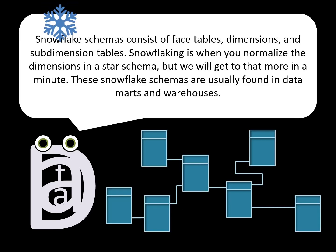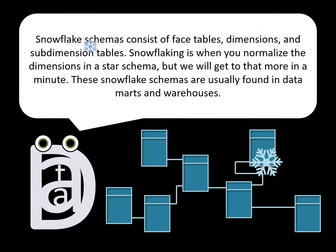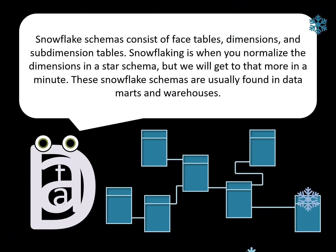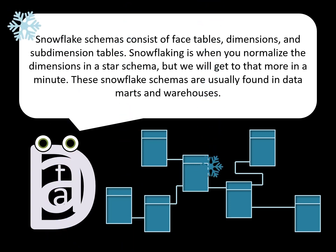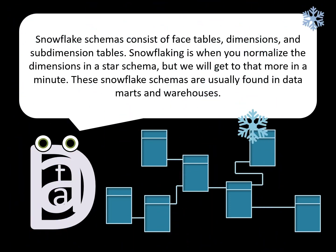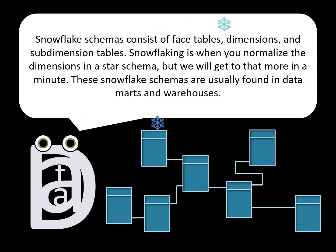Snowflake schemas consist of fact tables, dimensions, and sub-dimension tables. Snowflaking is when you normalize the dimensions in a star schema. These snowflake schemas are usually found in data marts and warehouses.